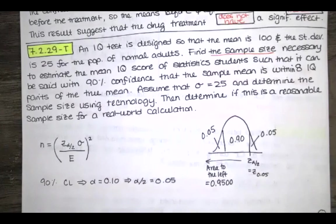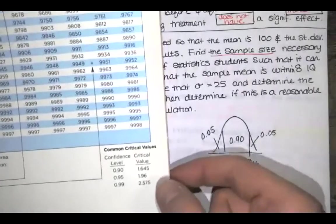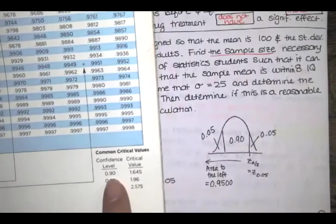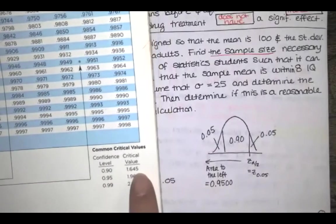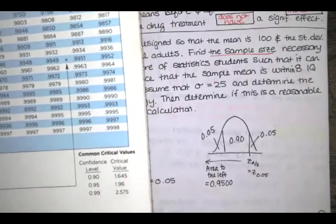I'm using table A2. Because this 90% confidence level is one of our top three most popular confidence levels, I could just look down here to confidence level of 90 and look for the critical value. It turns out that Z score is 1.645.